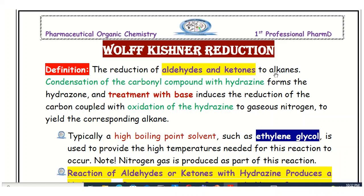Alkanes are the simple aliphatic organic compounds. In this reaction, aldehydes and ketones are reacted with hydrazine, and the molecule is converted into a hydrazone. In the next step, the hydrazone is reacted with a base like potassium hydroxide, which causes reduction of the carbon-containing bond. The hydrazine is oxidized, nitrogen is released as a gas, and the desired alkane product is formed.